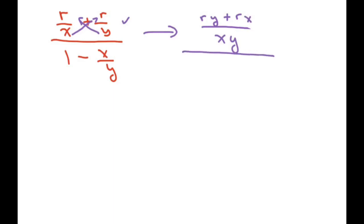Okay, do the same thing for the denominator, write my 1 in fraction form. My common denominator is y, and do the butterfly, so that's going to be y minus x. And again, this is like saying, ry plus rx over xy divided by y minus x, yeah, y minus x over y.